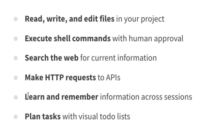Deep Agent CLI can learn and remember information across sessions. In my opinion, this is probably the most important feature. Every company — OpenAI, Anthropic, Google — is trying to make models better at memory: the ability to remember the right, most important information that is valid for the current conversation and retrieve it from memory. Deep Agent CLI is promising that it can do that.